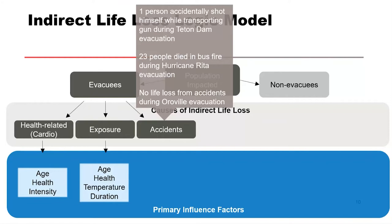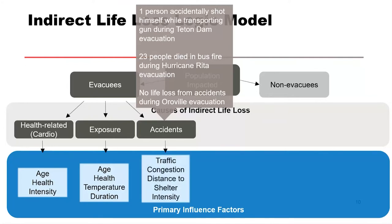Different kinds of accidents can happen while evacuating. For vehicle accidents, the causes include traffic congestion, distance to shelter, and intensity — meaning the length of time you're on a road. Think about any road trip: you're okay for a few hours, then need gas and breaks. Beyond that you get tired and lose attentiveness, and all of that can increase the likelihood of an accident.